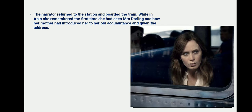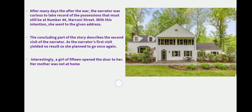Coming back to the present story: the narrator went back to Mrs. Doling but she refused to recognize her. Though by now it was very clear that Mrs. Doling did recognize her. The narrator boarded the train and sat thinking about Mrs. Doling. She was not happy with her first visit - she had gone and could not speak with Mrs. Doling. So she made up her mind to go back there again.